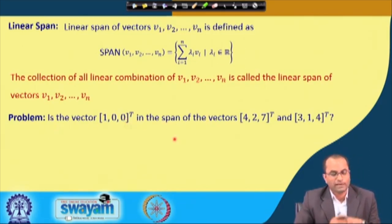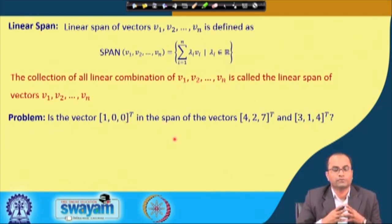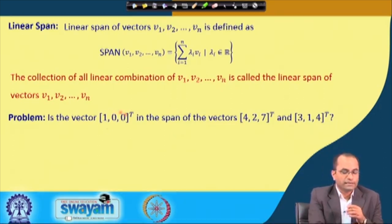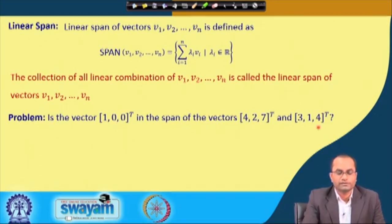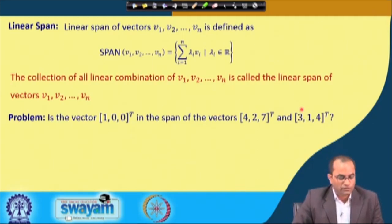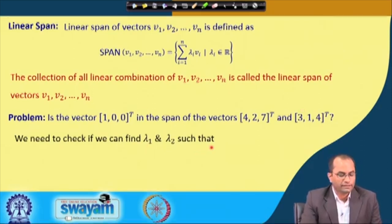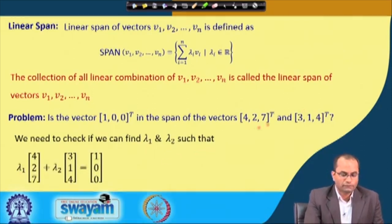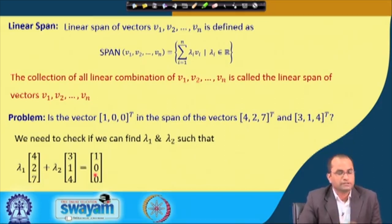What we need to check is whether we can write [1, 0, 0] as a linear combination of these two vectors. The span of these vectors is all linear combinations of them. We need to find λ₁ and λ₂ such that λ₁[4, 2, 7] + λ₂[3, 1, 4] = [1, 0, 0] — whether it is possible to find such lambdas or whether the system is inconsistent.